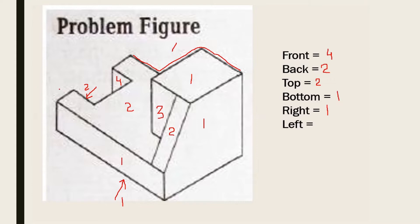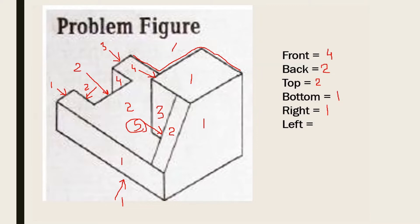Then the left. From the left: this one is one, then here the middle part — let's count it as two. Then this one, it's three. Then from the left surface, this one is four. Then the slanting one from the left, it's five. So the left surfaces are one, two, three, four, five. So total there are fifteen surfaces.